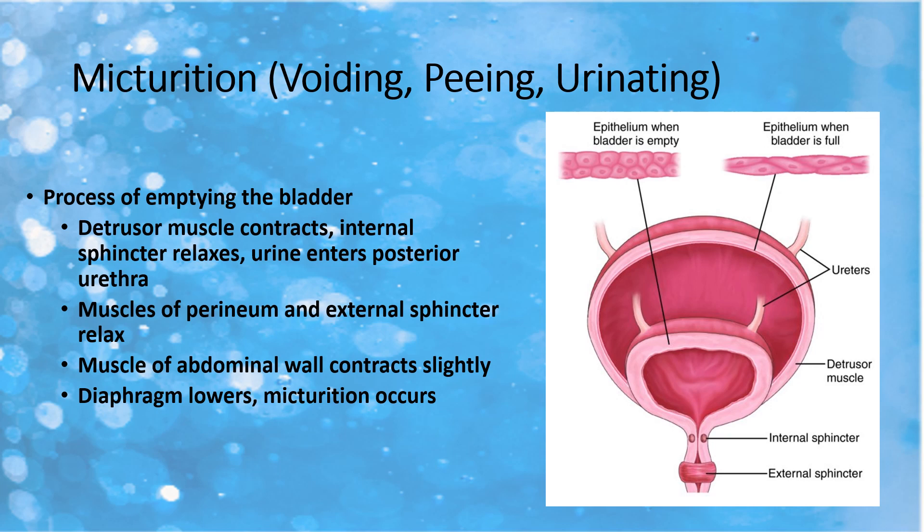Typically, once a person has become potty trained and gained voluntary control of this process, it becomes completely voluntary — our brains tell the body when it's time to urinate. Some conditions can affect voluntary control, like older age, fluid intake, activity levels and muscle tone, medications like diuretics, psychosocial conditions like anxiety, and some neurological disorders.